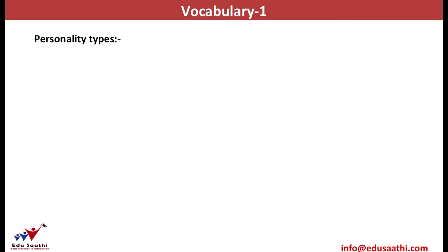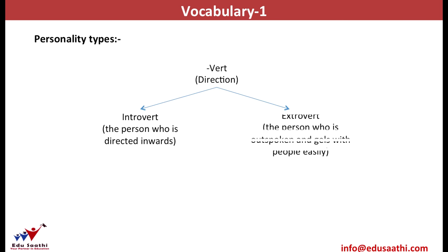Let us discuss the personality types of people. We often come across the words introvert or extrovert personalities. We break the word and find that '-vert' means direction. A direction may be inwards or outwards. Based on this, we have two personality types: introvert and extrovert. Intro or intra means in, and extro means out.